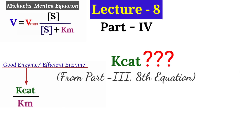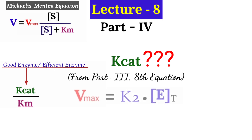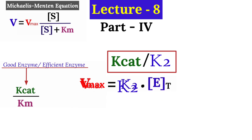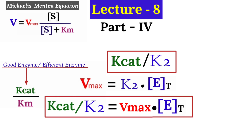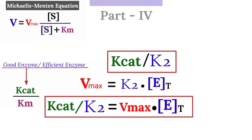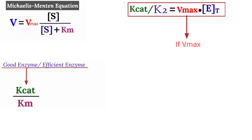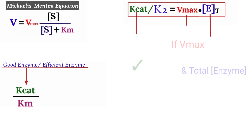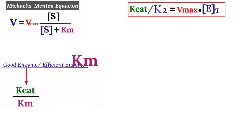From Part 3 we saw the equation: Vmax is equal to k2 multiplied by total enzyme concentration. This k2 is nothing but k_cat. By rearranging, you get k2 or k_cat equals Vmax divided by total enzyme concentration. If you know Vmax and total enzyme concentration, you can calculate the k_cat value, which is very important. The second term is Km.